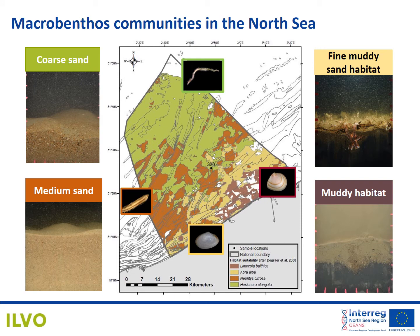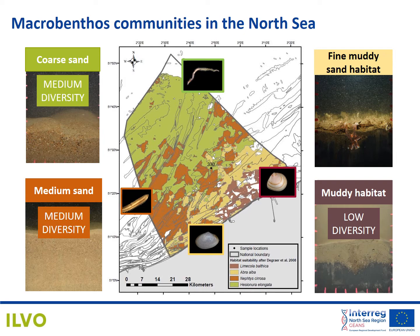The macrobenthos communities in the North Sea are very well known based on decennial-long monitoring data. This map shows the distribution of four macrobenthos communities, which are closely linked to four different habitats in the area. The muddy habitat is characterized by low diversity with at most five morphological species. The sandy habitats are located a little bit more offshore and have medium diversity with 10 to 20 morphological species. The fine muddy sandy habitat is a coastal habitat characterized by the highest diversity, with up to 40 different species.